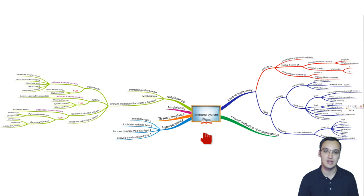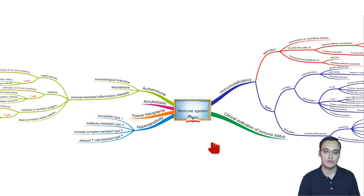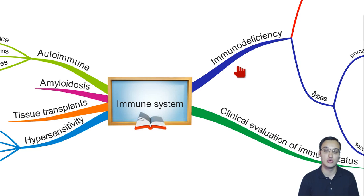Hello, today we will deal with immune system pathology. This is a mind map covering pretty much everything you have to know about immune system pathology. If you turn to the branches, we have six of them, and today we will deal with immunodeficiency.